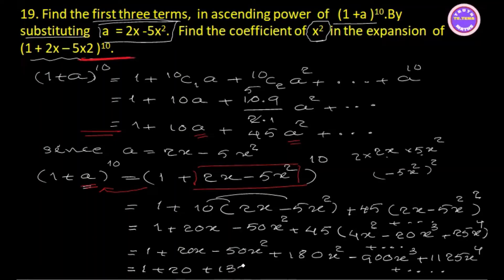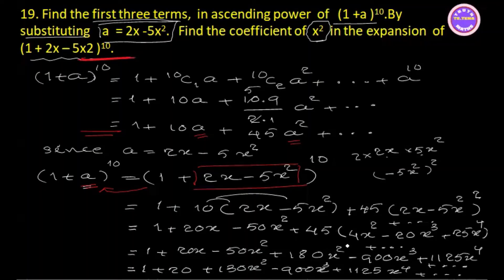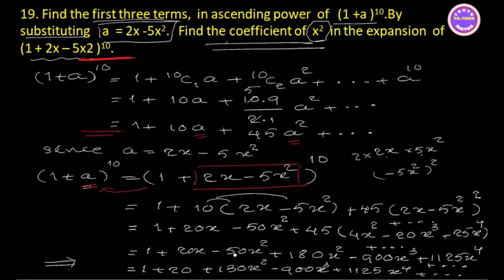Plus 130x squared minus 900x squared plus 1125 x power 4, plus and so on. See now the coefficient of x squared is 130.